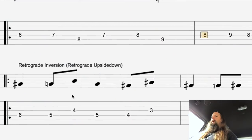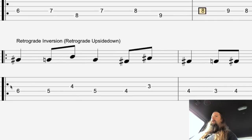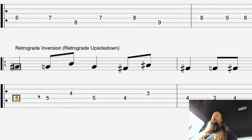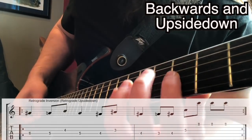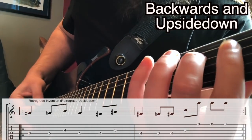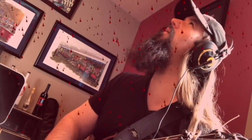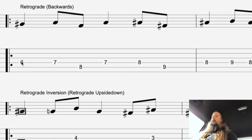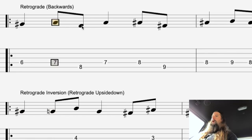Now let's move on to the final variation, which is the Retrograde Inversion. Here we take the retrograde and flip it upside down. So the retrograde goes up a minor second here, and we're heading down a minor second in the retrograde inversion. Down a major third in the retrograde, up a major third in the retrograde inversion.